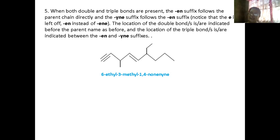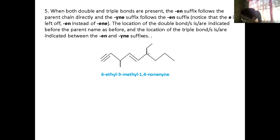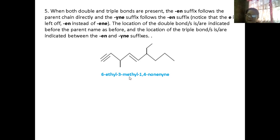The first thing you should do is identify the substituents. There is a methyl at carbon 3 and an ethyl at carbon 6. By means of alphabetical arrangement, that is 6-ethyl, then 3-methyl. The double bond is at carbon 4, so you put 4-ene.